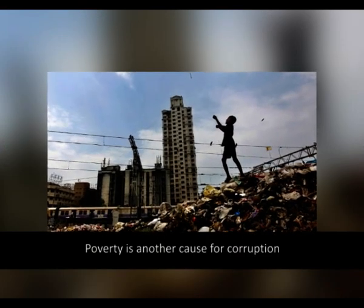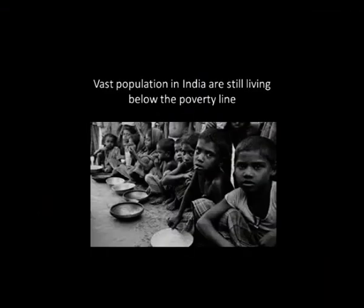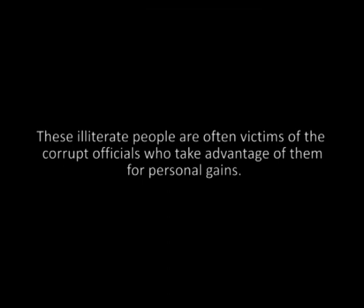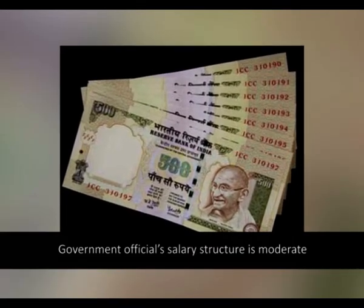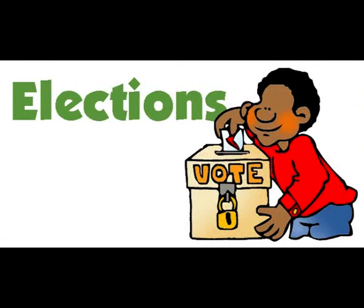Poverty is another cause of corruption. The majority of India's vast population still lives below the poverty line. Illiterate people are often victims of corrupt officials who take advantage of them for personal gains. Government officials' salary structures are moderate. Elections are the time when corruption is at its highest level — politicians accept big funds from rich industrialists for personal favors, and the public is bribed to vote for these corrupt politicians.